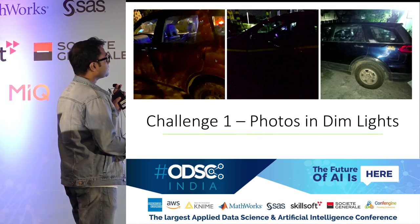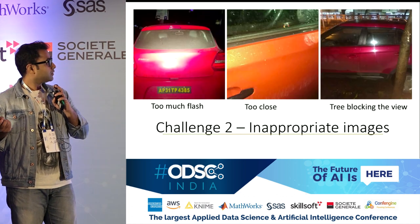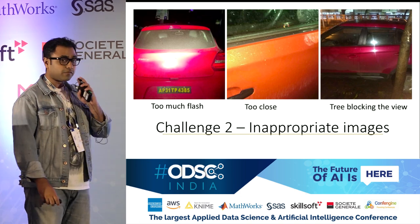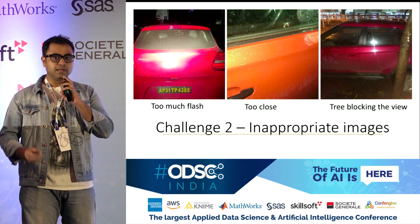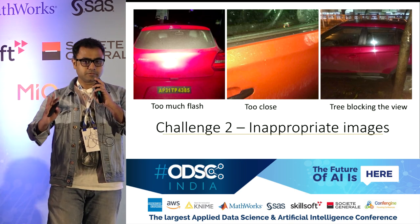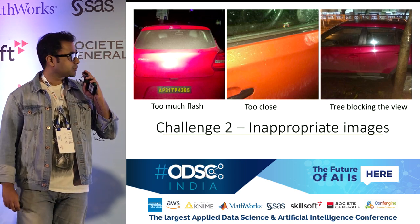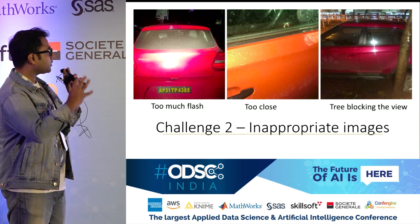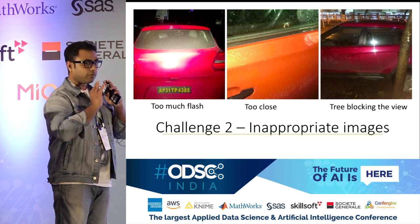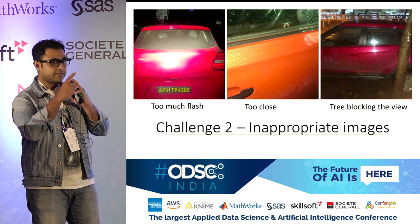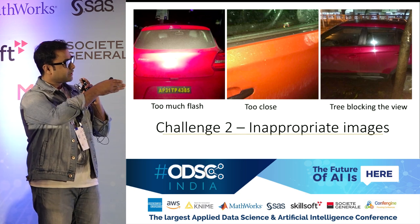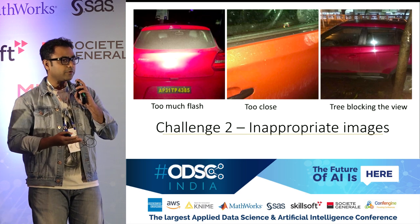The second challenge is inappropriate images. For example, one person uses too much flash — not ideal. A second image is taken from very close proximity, meaning we can't tell which part of the car it is or get a complete view of one side. And a third type has a tree in between — if there's damage at the part covered by the tree, we won't be able to detect it.